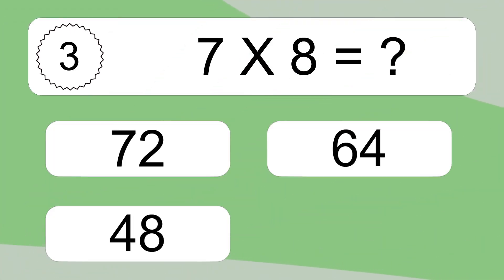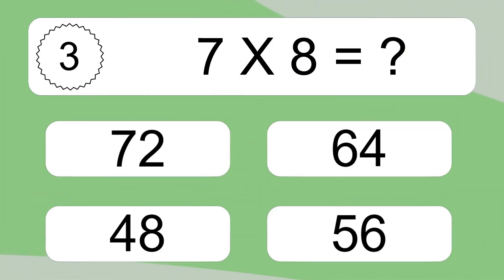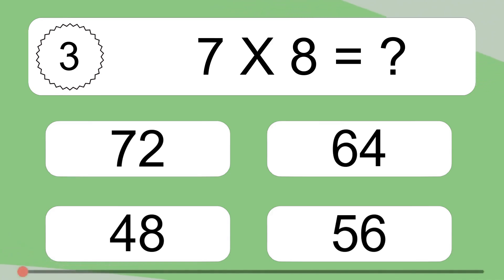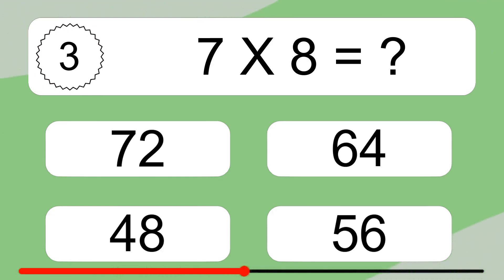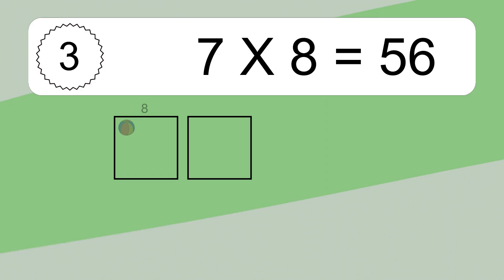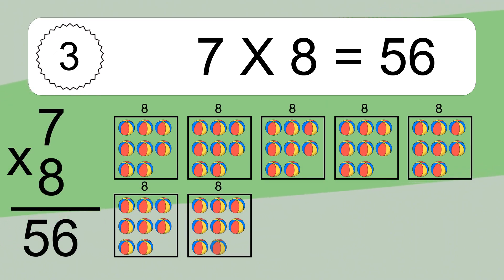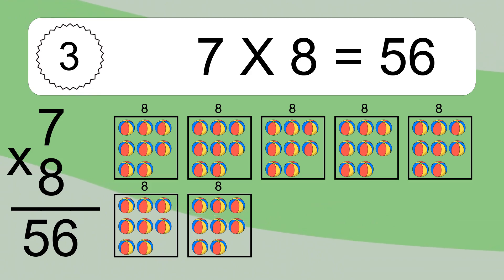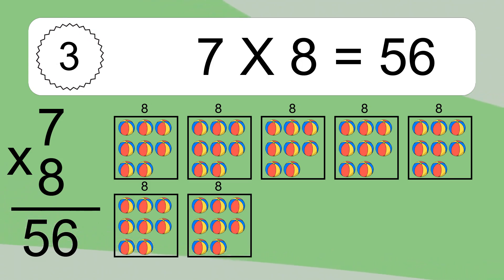7 times 8 equals what? 7 times 8 equals 56. We have 7 boxes, and each box has 8 colorful balls inside. If you count all the balls in all the boxes together, you will have 7 times 8 balls. This equals 56 balls.